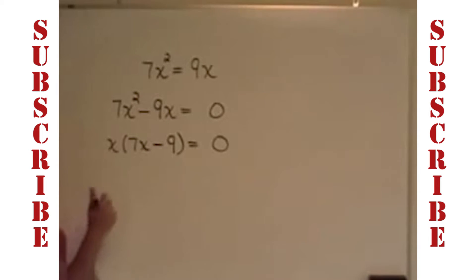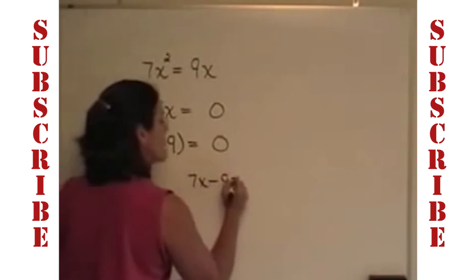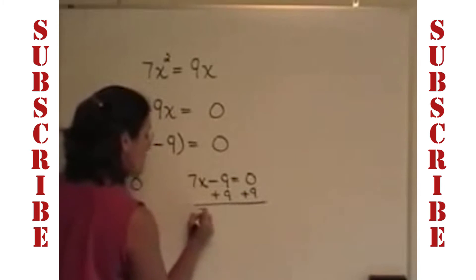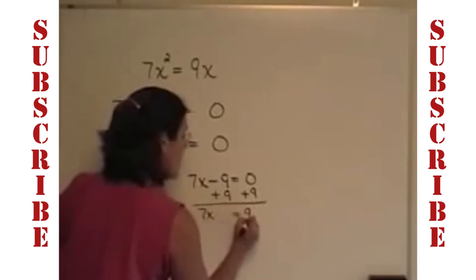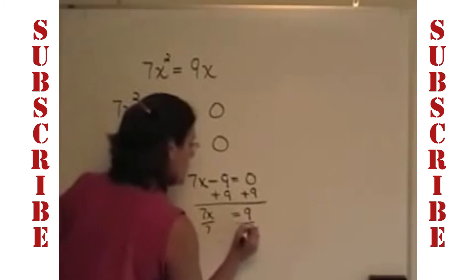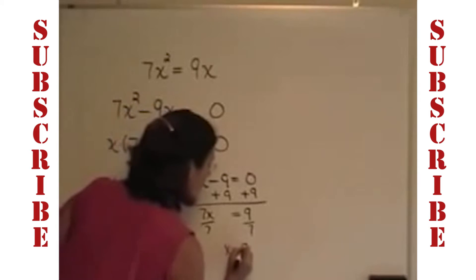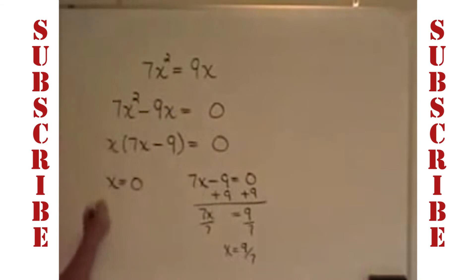This is in factored form. The two factors are x that has to be set equal to 0. In other words, one of my solutions is x equals 0, and the other one, 7x minus 9, has to be set equal to 0. So I will add 9 to both sides, and I'll have 7x equals 9, and then I'll divide both sides by 7, and I'll have my other solution, in this case, 9 sevenths.